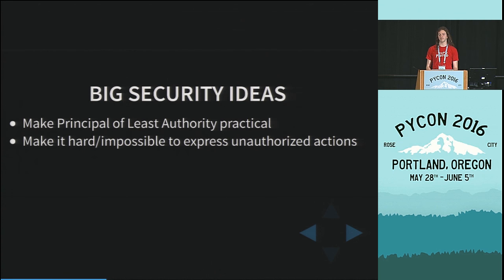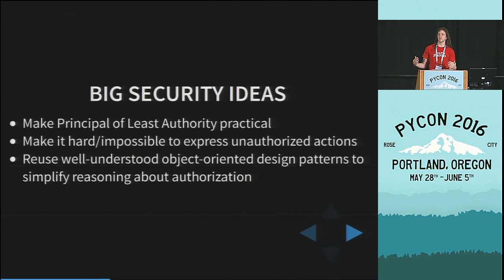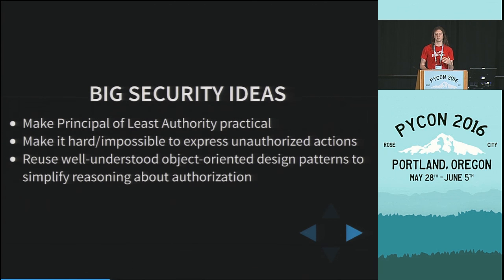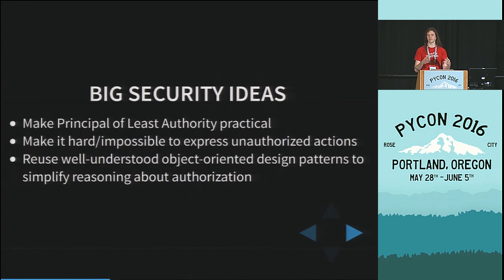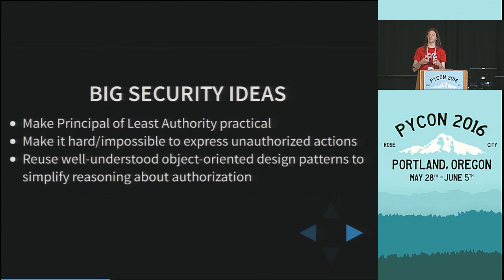Path traversal is almost entirely a problem caused because paths are forgeable. The other big benefit of using object capability security is that we can reuse object-oriented design patterns. Developers tend to understand concepts like encapsulation, isolation, and separation of concerns. If you have a reference to an object, you can call methods on it. What object capability security does is take those same patterns and apply them to authorization so that we can reason about them in composable, hierarchical ways.